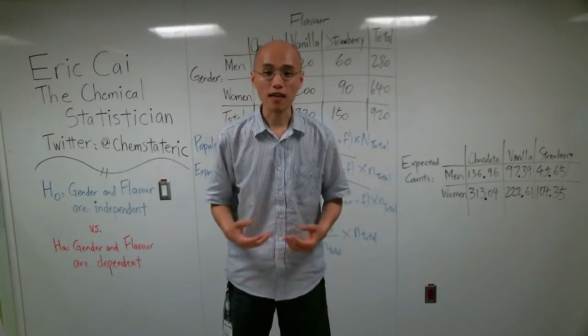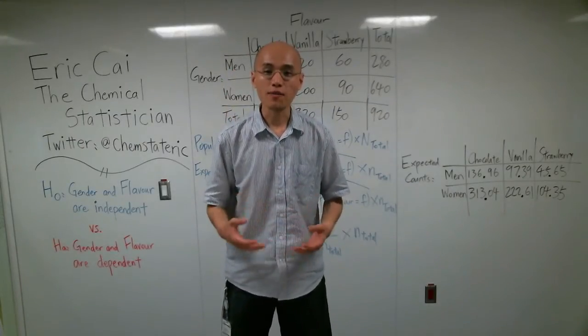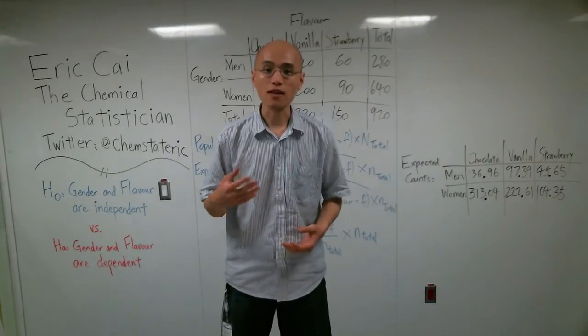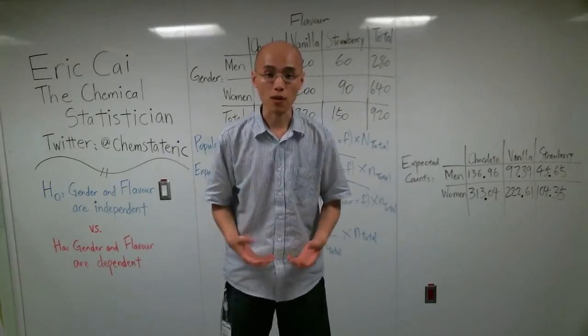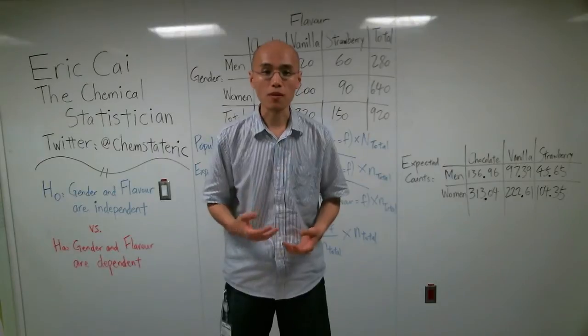Hi, I'm Eric Cai, the chemical statistician, and today I'm going to demonstrate to you how to calculate expected counts in a contingency table using joint probabilities.